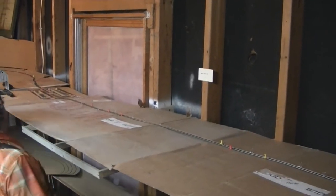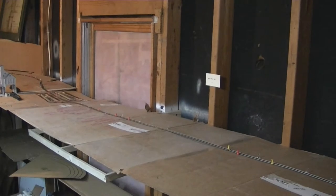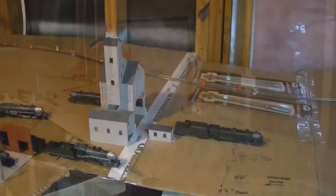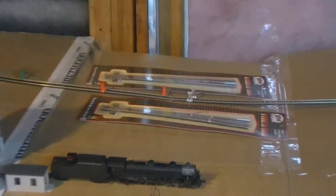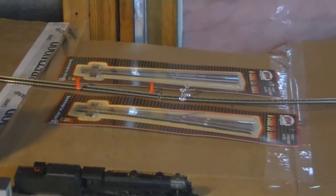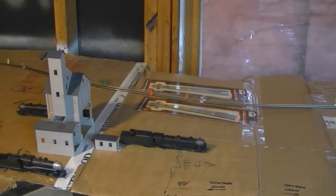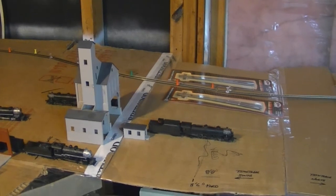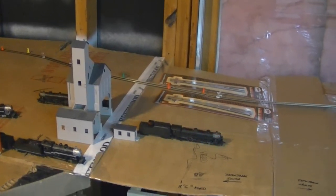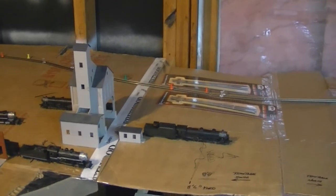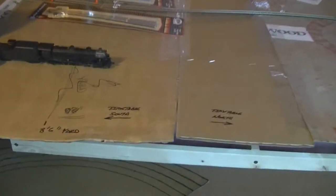We're still debating how many tracks we're going to have. Where them switches are laying, that's the south end of the yard. This yard actually sits 180 degrees from the actual directions that it's going to sit. On the fascia will be labeled timetable north, timetable south, which is on the cardboard there.